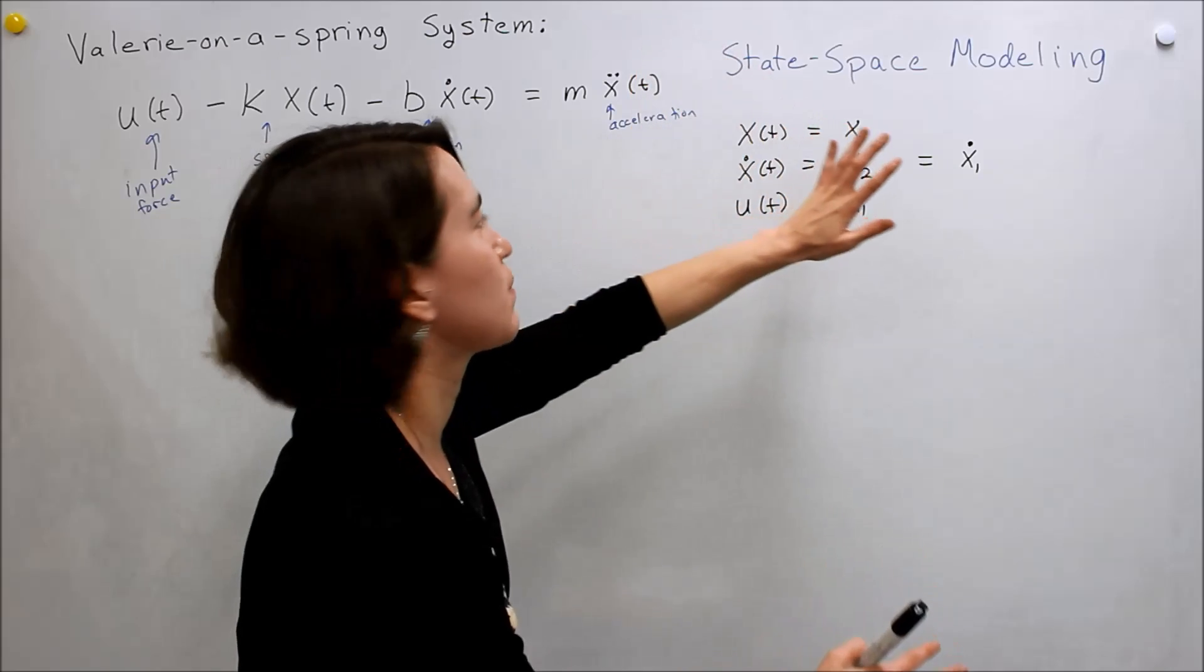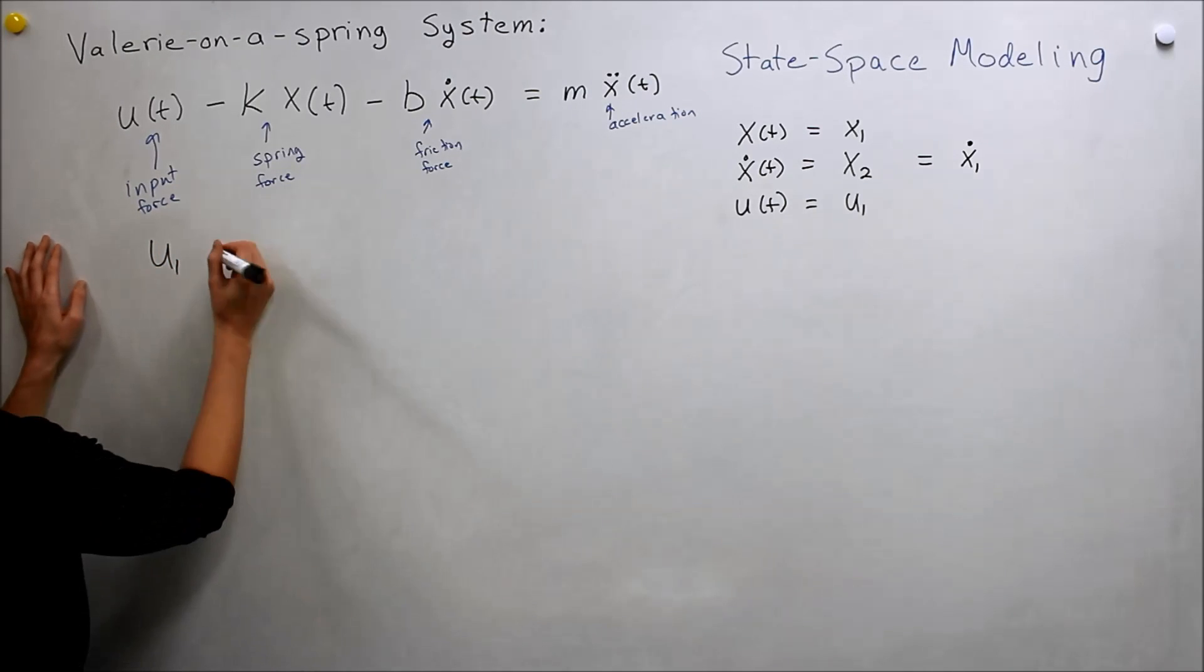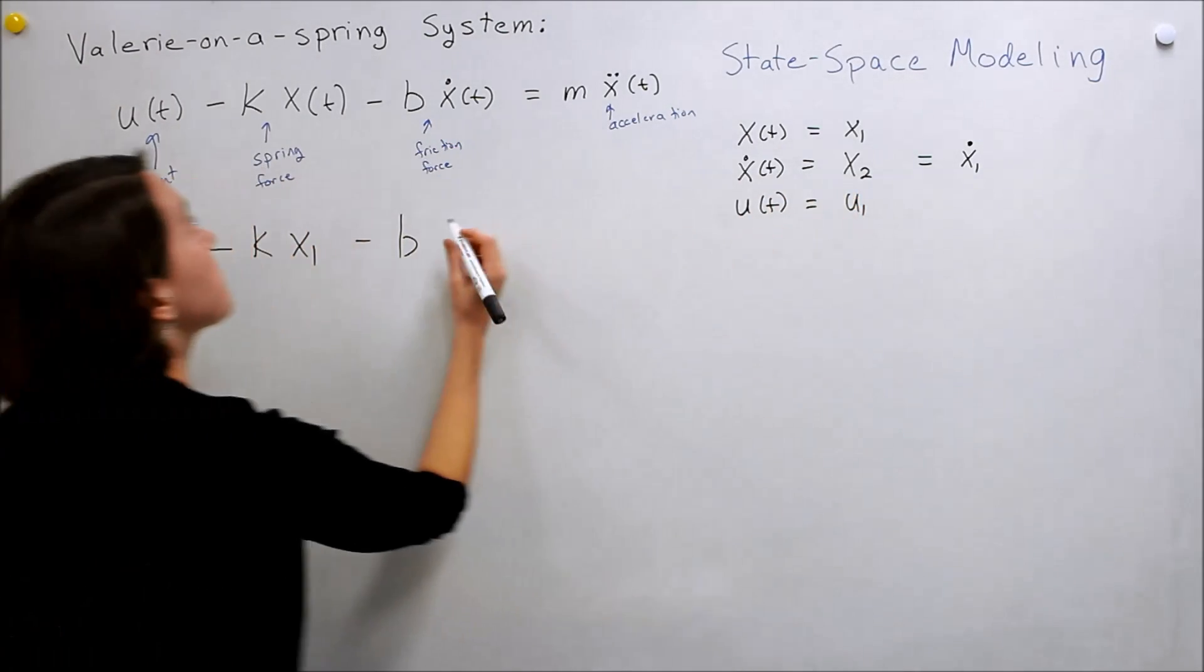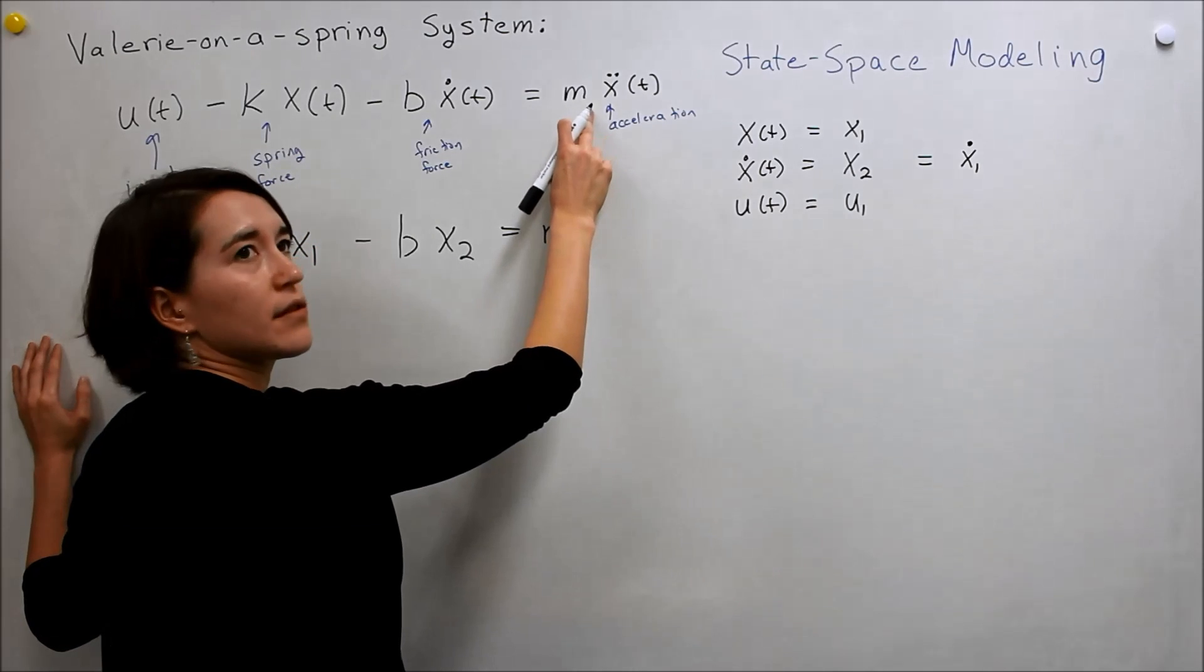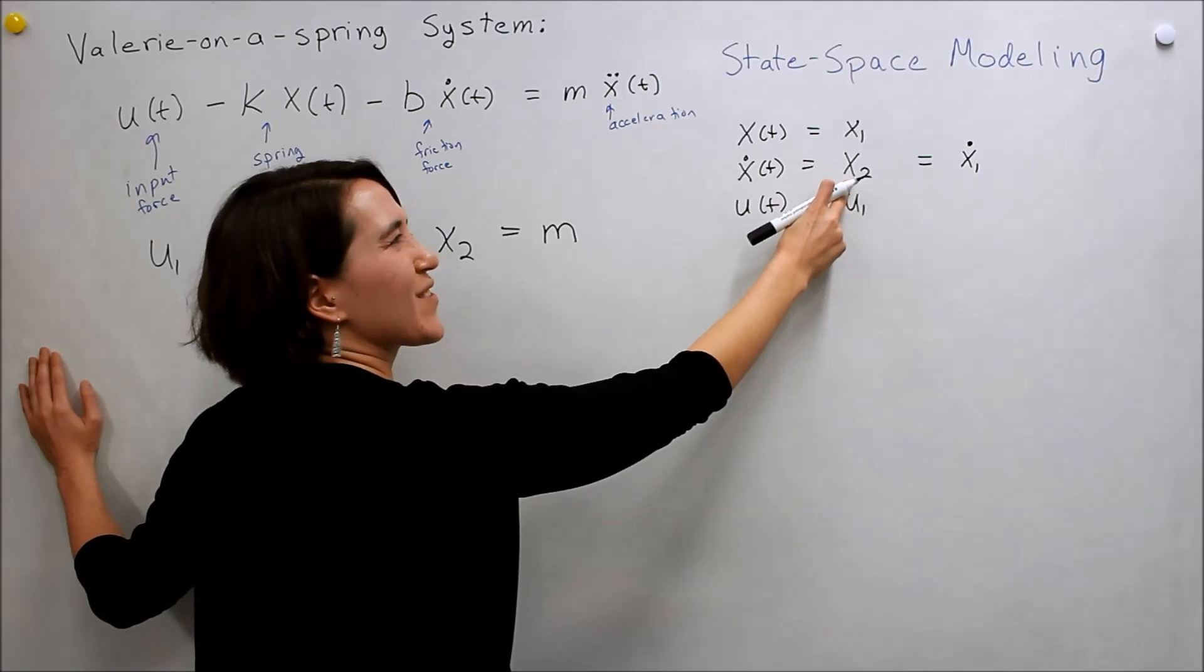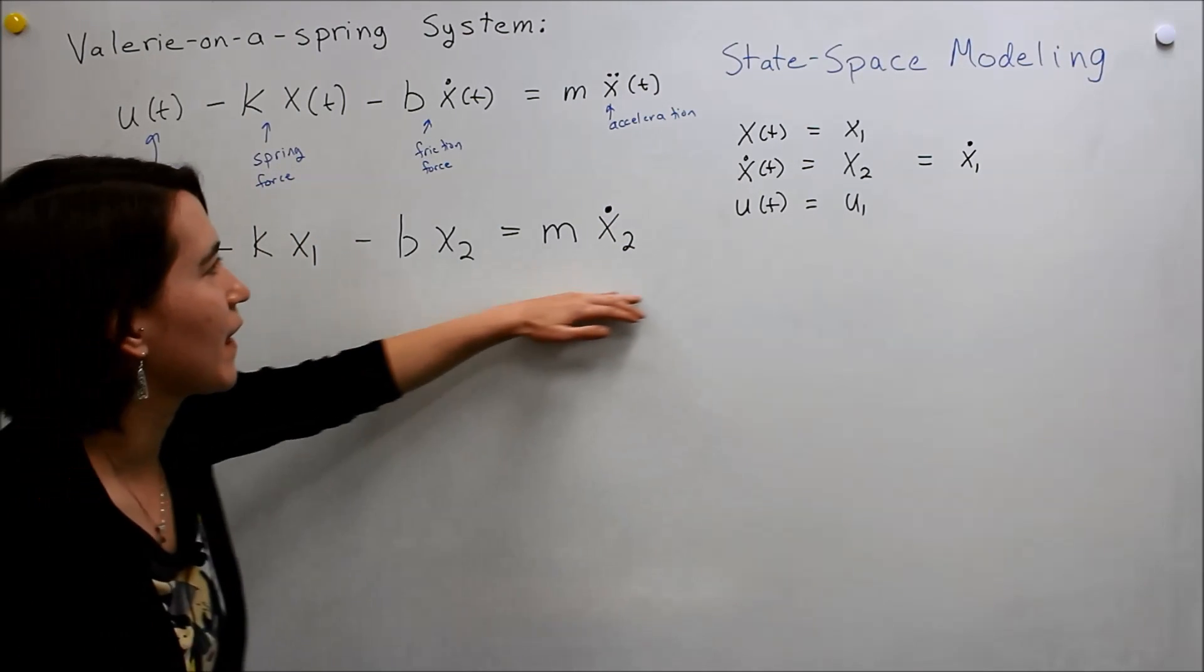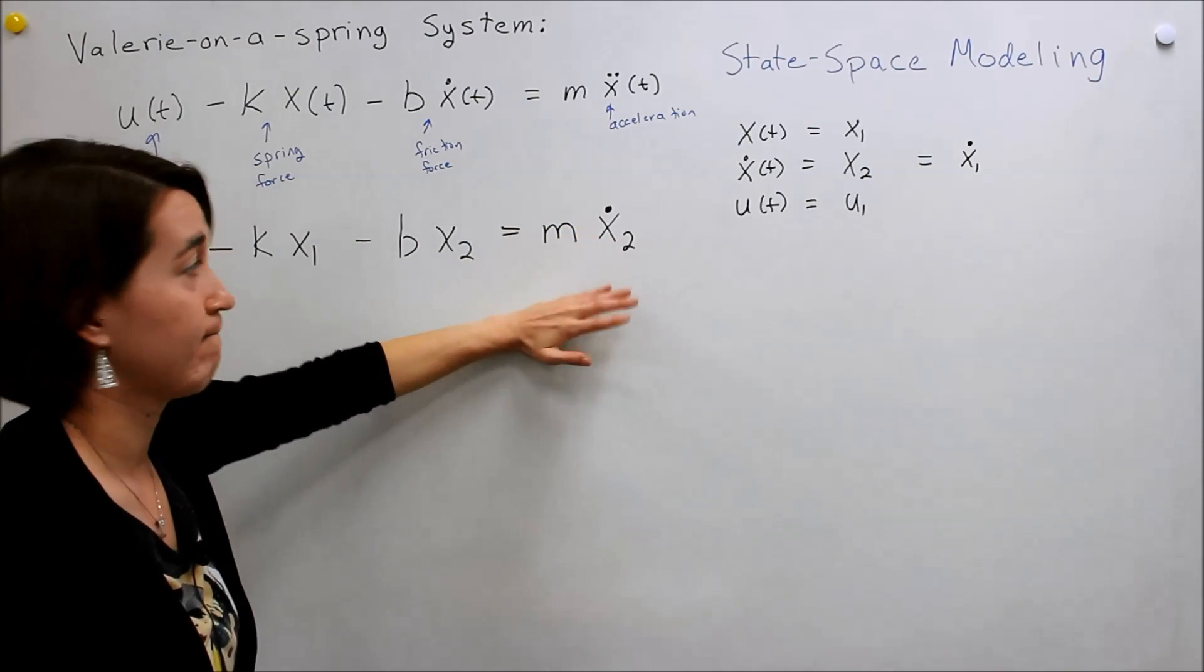We have some new equations here. We changed our variable names. So let's first of all just put that into this equation. So u becomes u1, so we have u1 here, minus k is our constant still, x is now x1, b, x dot is now x2, and then m, and we have our x double dot, which is actually the derivative of x2. So x2, which is single dot, take another derivative and we get x2 dot. So you're following me? We have put everything in terms of our new equations and we have one x2 dot, but only a first derivative here.